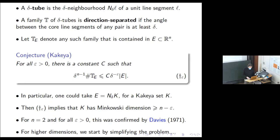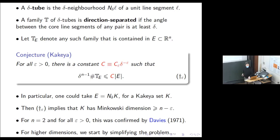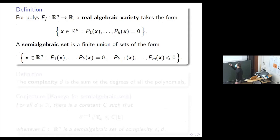I'm going to brush lots and lots of details under the carpet, including all constants will essentially be one, or if there's a constant, there's probably one of these epsilon powers in there. We're going to consider semi-algebraic sets as the title indicated. A real algebraic variety takes this form — it's the common zero set of a collection of polynomials. A good example is the unit sphere: X squared plus Y squared minus one equals zero.